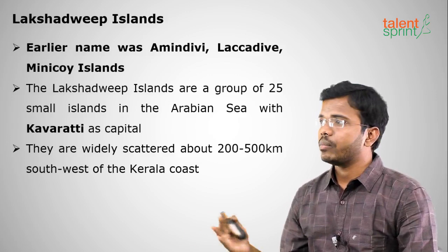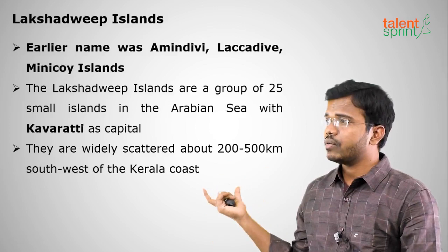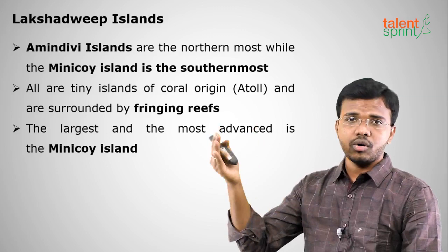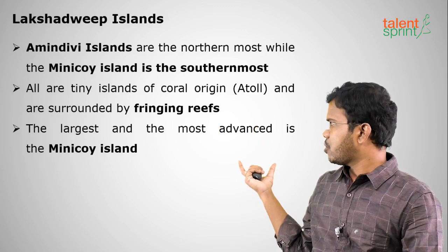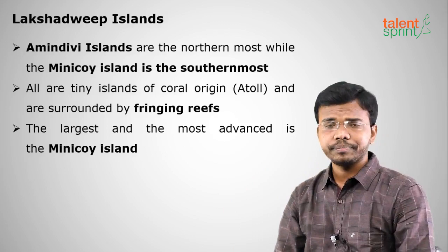The Lakshadweep Islands in the Arabian Sea were formerly known as Lakshadweep, Amindivi, and Minicoy Islands. They are a group of around 36 small coral islands with Kavaratti as the capital, scattered 200 to 500 kilometers from the mainland. Amindivi Islands are the northernmost and Minicoy Islands are the southernmost. They have coral reefs — structures built by coral polyps that feed on dead matter and provide food for marine organisms. The world's greatest coral reef is the Great Barrier Reef of Australia.